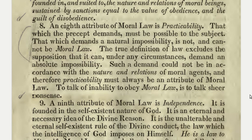An eighth attribute of moral law is practicability. That which the precept demands must be possible to the subject. That which demands a natural impossibility is not and cannot be moral law. The true definition of law excludes the supposition that it can, under any circumstances, demand an absolute impossibility. Such a demand cannot be in accordance with the nature and relations of moral agents, and therefore practicability must always be an attribute of moral law. To talk of inability to obey moral law is to talk sheer nonsense.